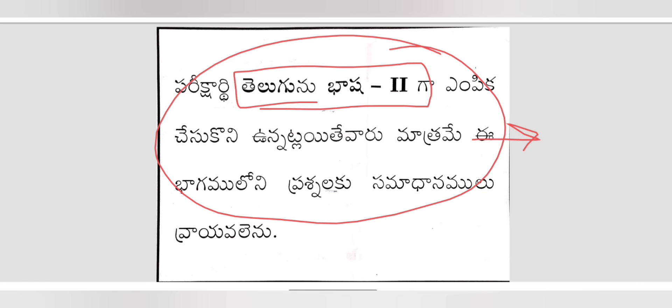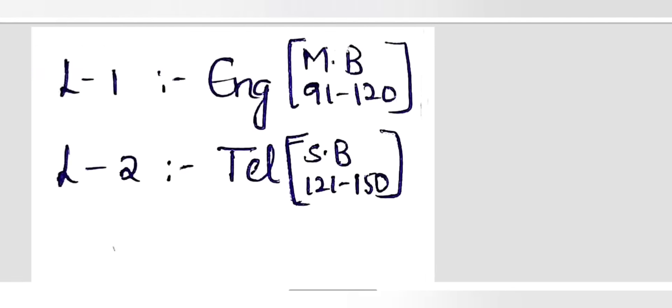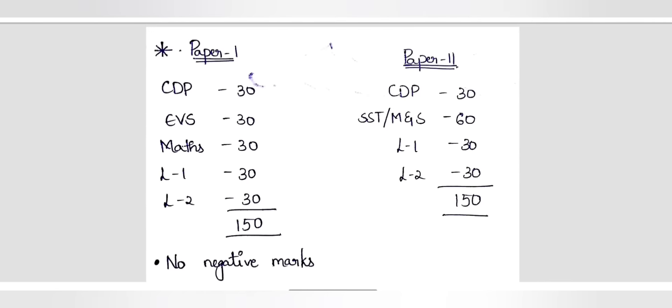You will see the Admit card. You will check the Language 1 name and Language 2 selection on the Admit card. If you don't have the correct information, check it. You will have Language 2 confirmed. Check this point carefully. The point is to avoid tension — if you encounter a difficult question, check the options correctly. Start with CDP first, then the other languages and subjects.